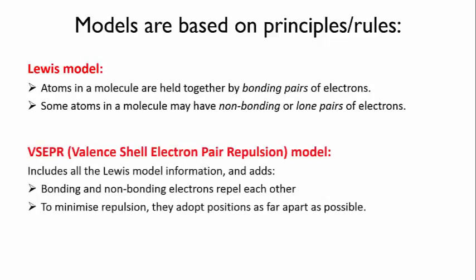The VSEPR model takes those principles and adds a few of its own. As the name suggests, it's all about the fact that electrons repel each other since they all have the same charge — they're all negatively charged. So VSEPR says that in a molecule, bonding and non-bonding electrons will repel each other, and that the molecule will adopt a shape that allows those electrons to be as far apart as possible. Hence, valence-shell-electron pairs — that's the bonding and non-bonding electrons — repel each other.